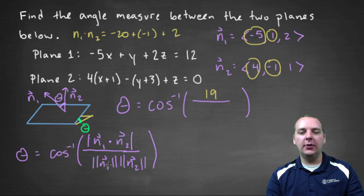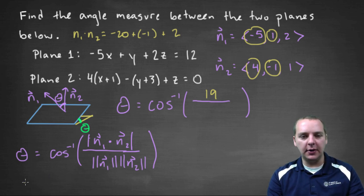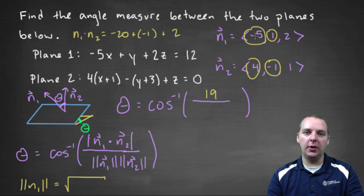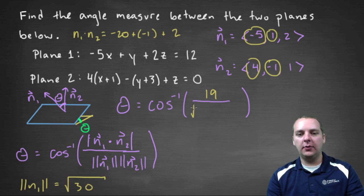And then the magnitude of n one, let's see, let's just squeeze it down here maybe. Magnitude of n one, that'll be the square root of twenty-five and one and four, because I squared the i, j, and k components, adding them up, and then we'll take their square root. So twenty-five and one make twenty-six, and four makes thirty, so I have root thirty, times square root of, let's take the magnitude of n two.